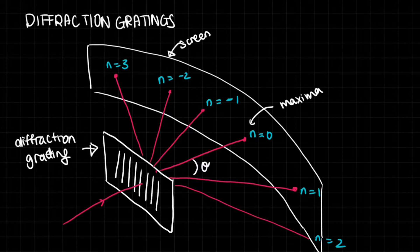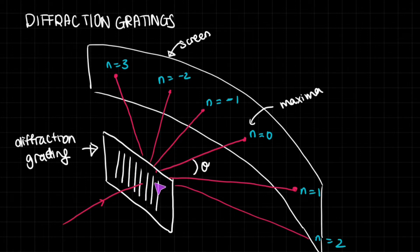Essentially what happens is you pass some sort of light — let's say this is a laser of red light — through a diffraction grating. A diffraction grating is just a thin card that has a lot of slits on it that are really, really small and infinitesimally spaced apart. There are thousands of them within one centimeter.